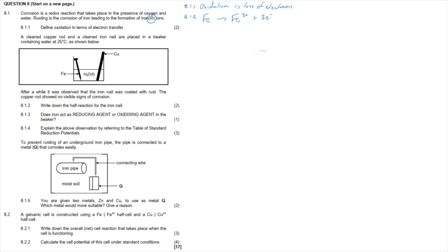Question 8.1.3: Does the iron act as a reducing agent or oxidizing agent in the beaker? Since the iron is being oxidized, it must be the reducing agent. The substance that is oxidized is always the reducing agent.